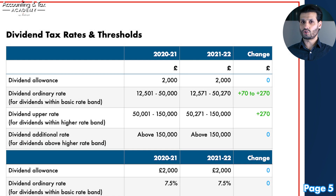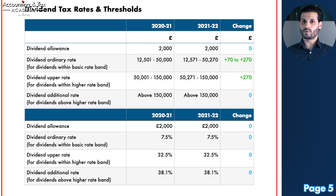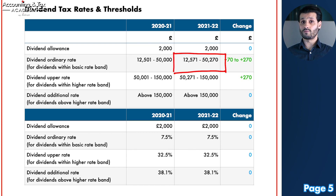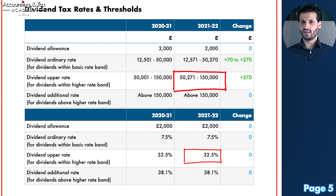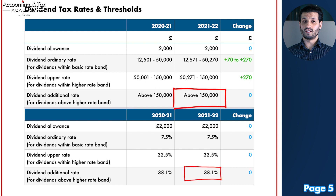Dividend tax rates are chargeable in line with income tax thresholds. Any dividends between £12,571 and £50,270 are subject to the ordinary rate of 7.5%. Any dividends between £50,271 and £150,000 will be subject to dividend tax at 32.5% — the higher rate. And finally, any dividends over £150,000 are taxed at the additional rate of 38.1%.